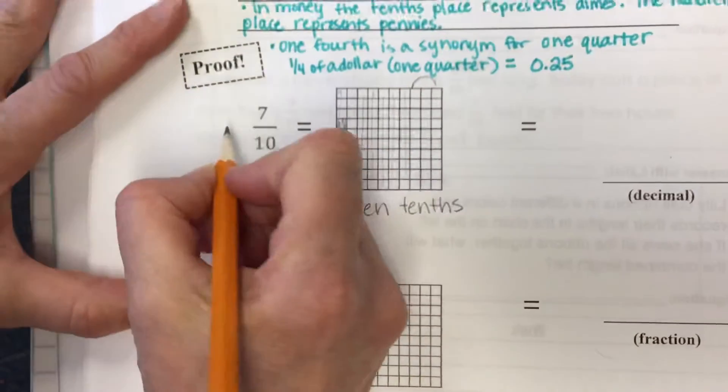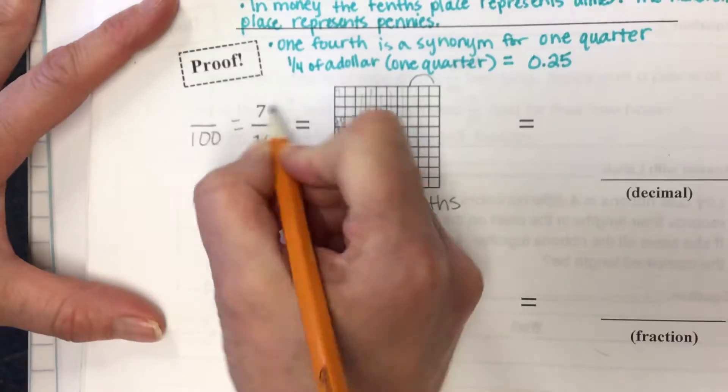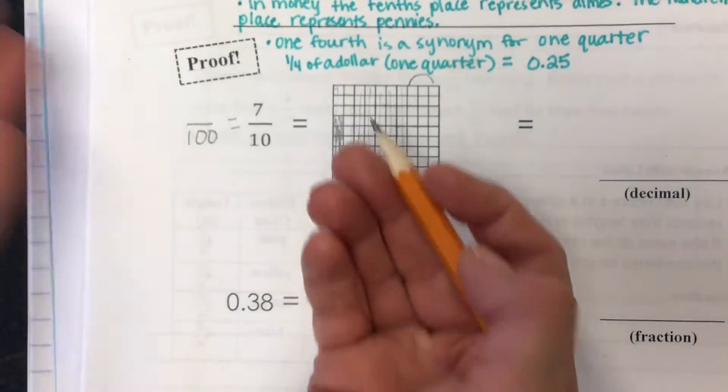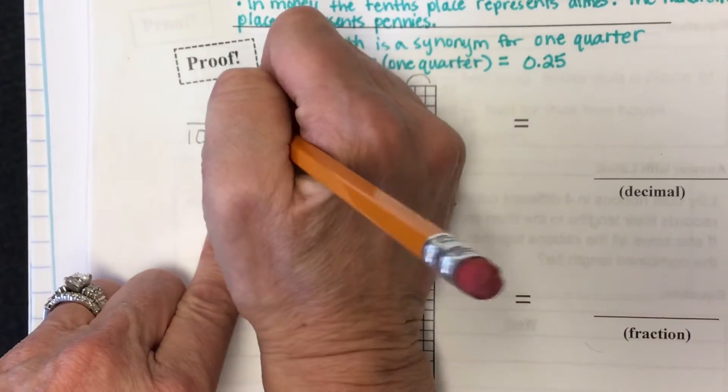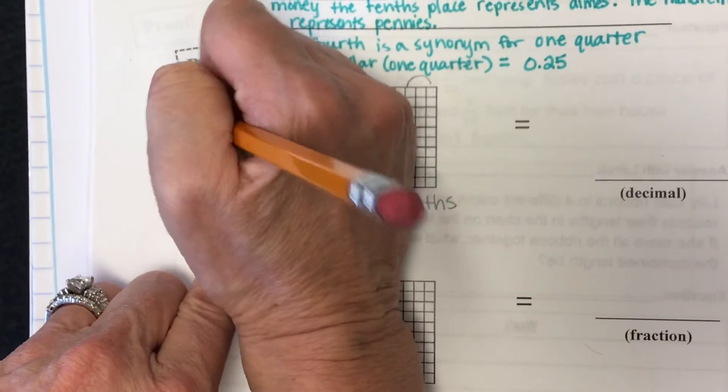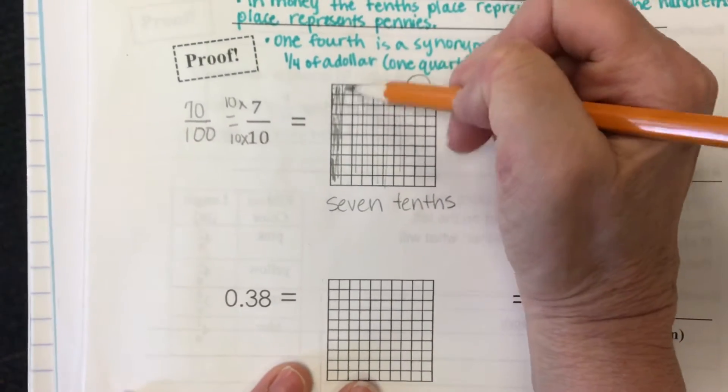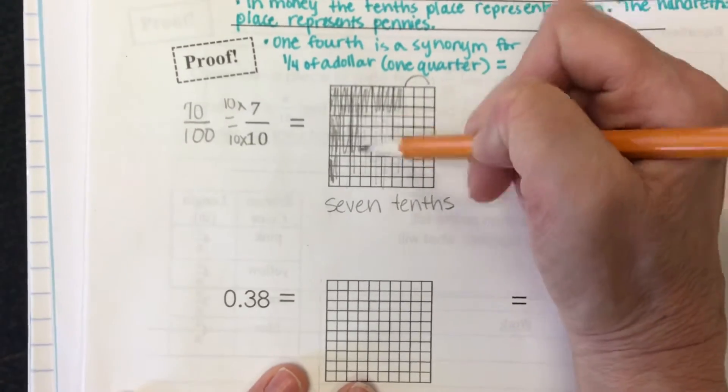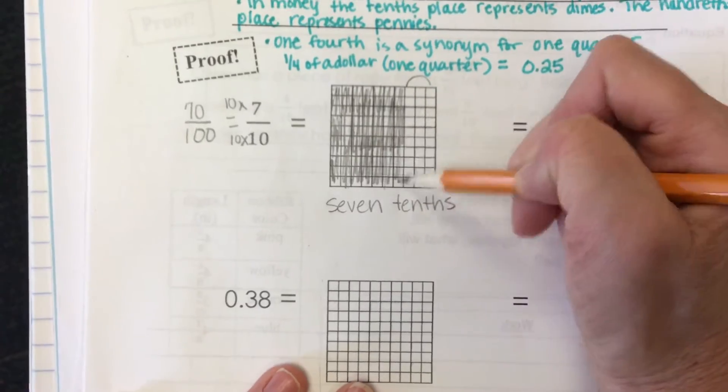Another thing that you could have done is converted this. Seven tenths is how many hundredths? 70. 10 times 10 is 100. 7 times 10 is 70. 70 hundredths. So then you needed to shade in 70 of these, or 7 tens. And each column has 10 in it.